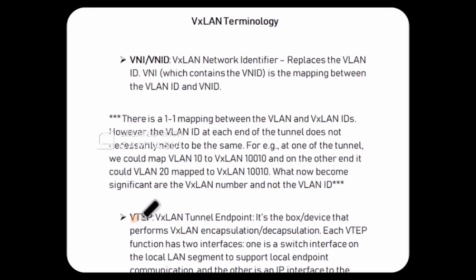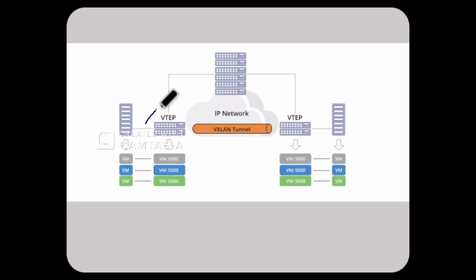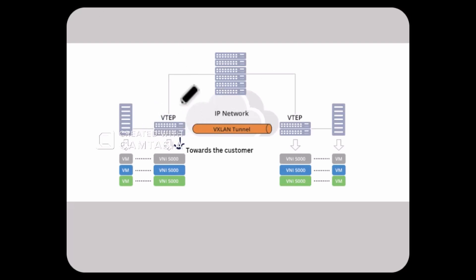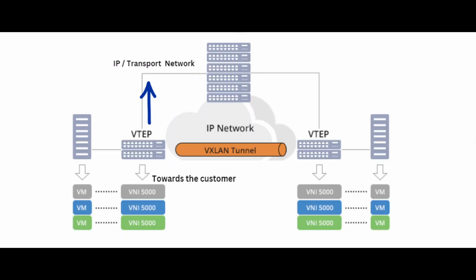Next is VTEP, or VXLAN Tunnel Endpoint. Yeh woh device hai ya woh box hai jo VXLAN encapsulation aur decapsulation perform karta hai. At a very high level, VTEP ke do interfaces hote hain - ek interface jo customer network se connect karta hai towards the local area network, aur doosra interface jo connect karta hai towards the IP network.